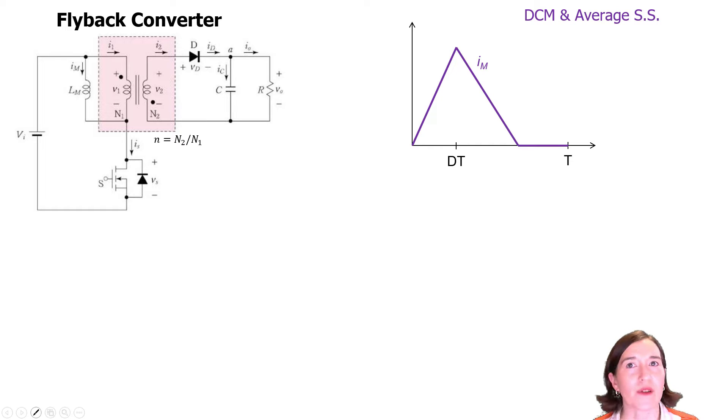We're going to use power balance to look at the relationship between the input and the output and use that to figure out the output voltage in terms of things that we already know about the converter. So let's set that up and see what we can do.